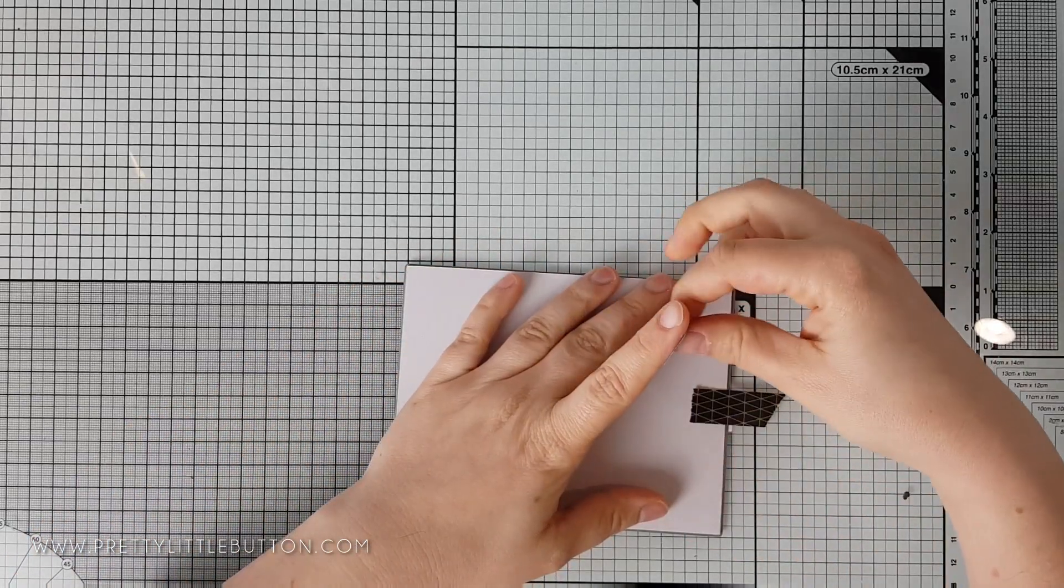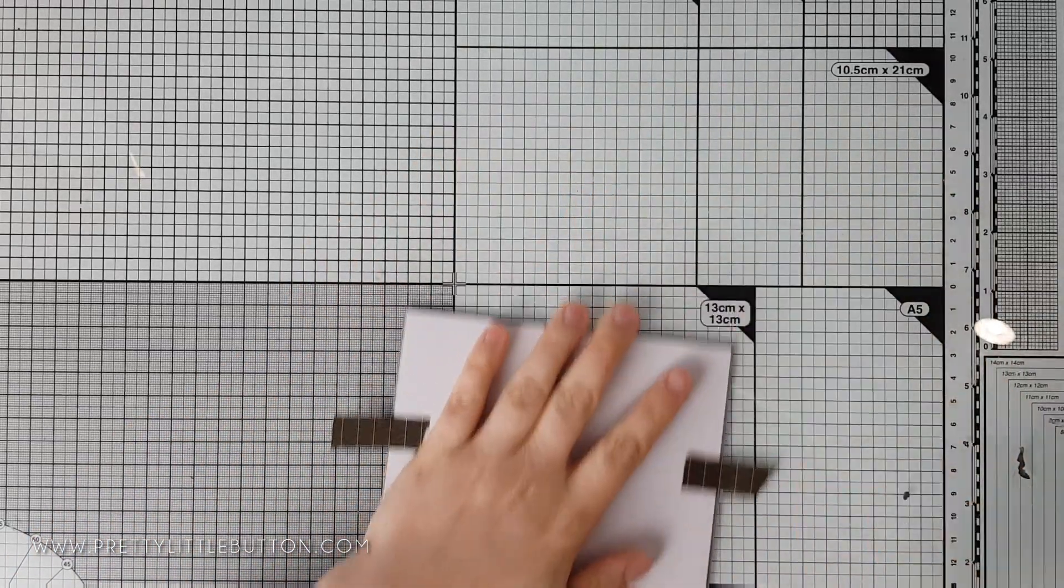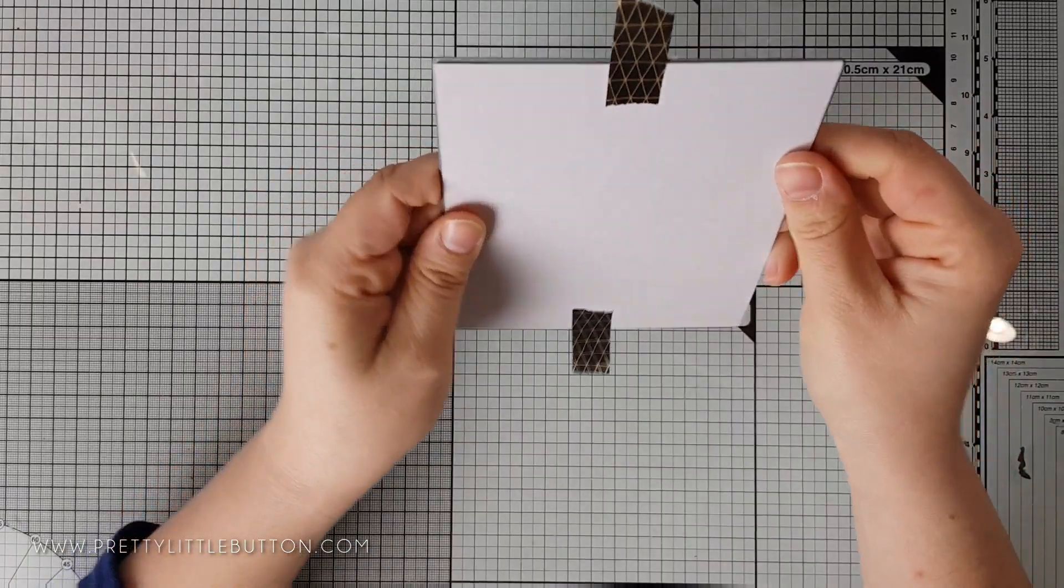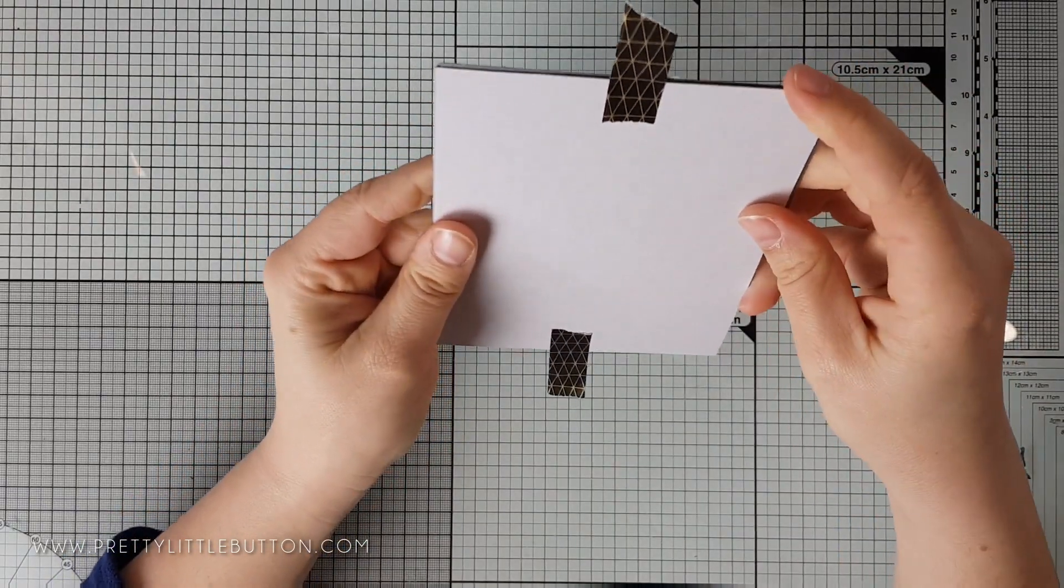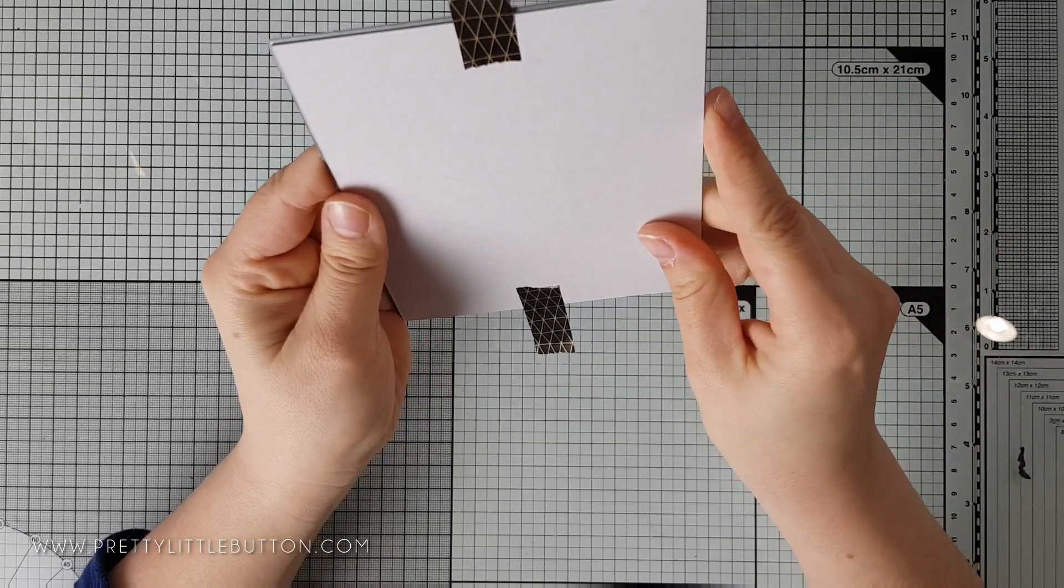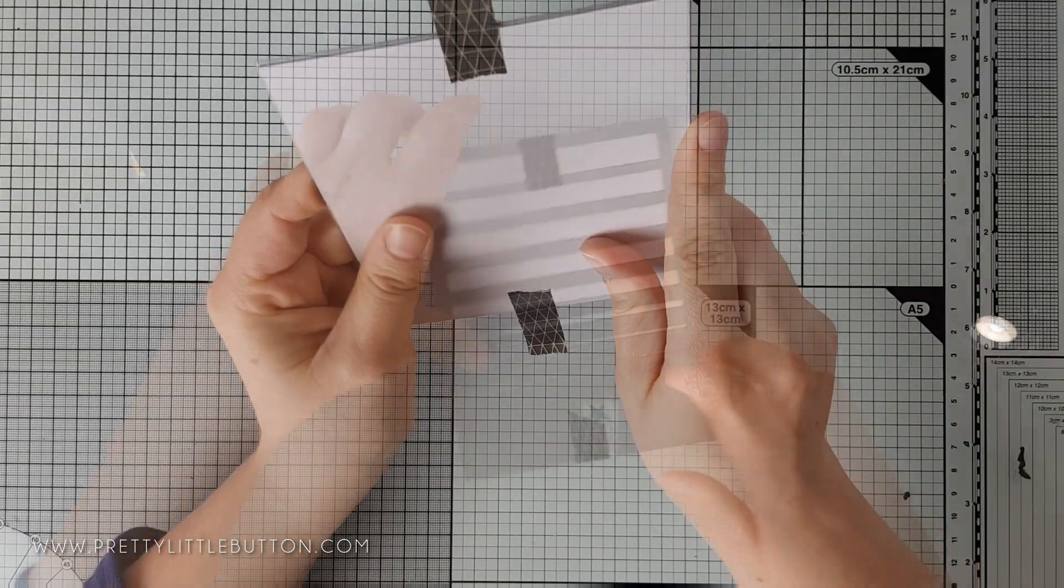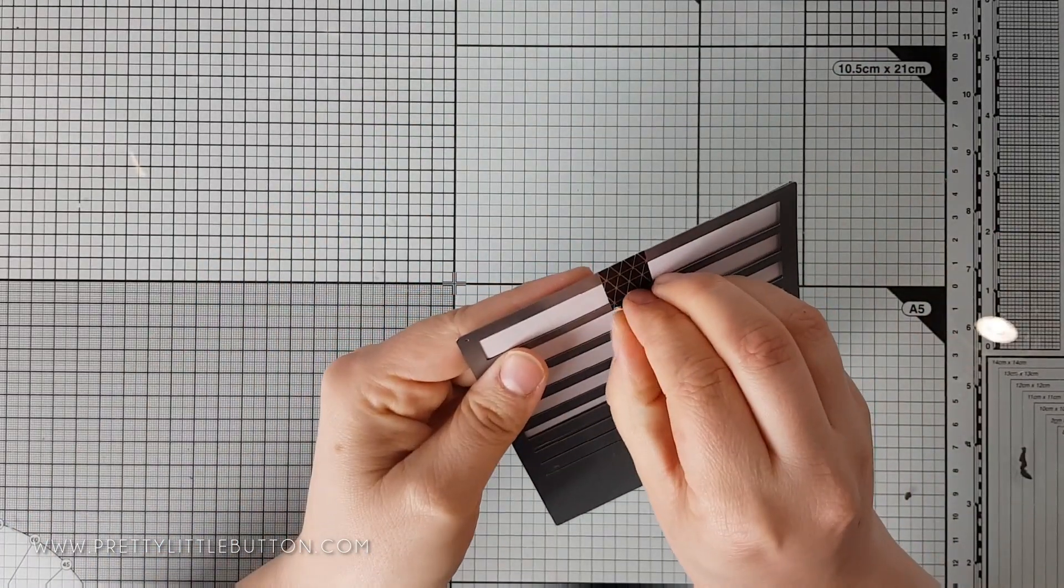So tape your cover die to a piece of Fog cardstock by Lawn Fawn and make sure it's cut down to the card panel size you're going to use. You need to run this through your die cutting machine with an embossing mat and the sandwich set up according to your machine for dry embossing.